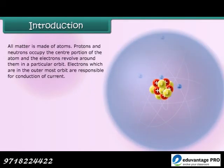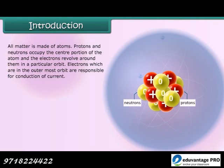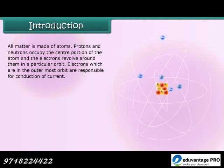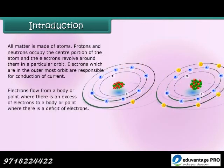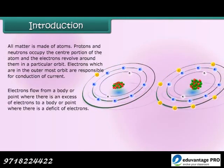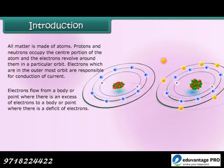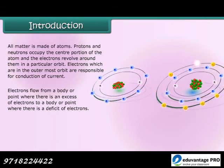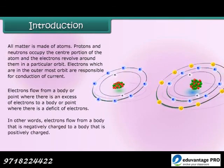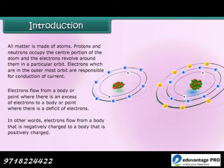All matter is made of atoms. Protons and neutrons occupy the center portion of the atom and the electrons revolve around them in a particular orbit. Electrons which are in the outermost orbit are responsible for conduction of current. Electrons flow from a body where there is an excess of electrons to a body where there is a deficit of electrons — in other words, from a negatively charged body to a positively charged body.